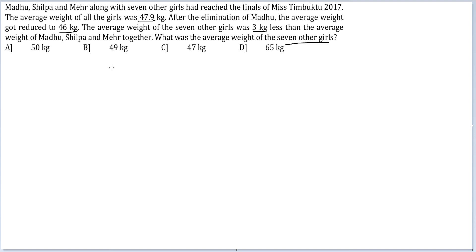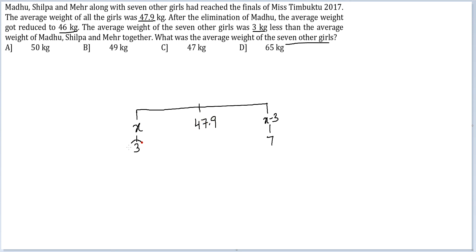Finding out the individual weight of Madhu is of no consequence. There are 3 people — Madhu, Shilpa and Meher — with an average weight of X, and there are 7 people with an average weight of X minus 3. Together these two groups give an average of 47.9. Using the weight balancing technique or the allegation method, this ratio should be 7 and 3 — this should be 7 and this should be 3.